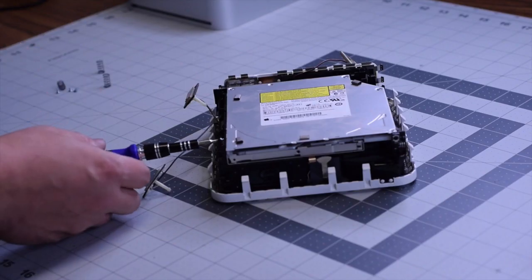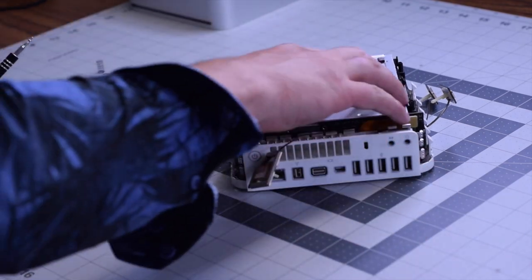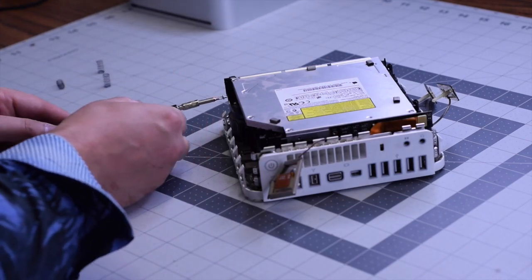Once that's secure, go ahead and put back the two Phillips head screws on the left side and then the two Phillips head screws on the right side of the DVD drive. That last fourth screw might need an extension socket.